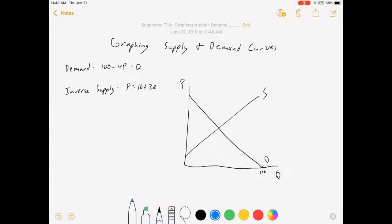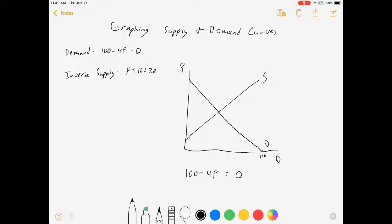So, let's solve for that next. I want to get 100 minus 4P equals zero, I'm sorry, equals Q, and I'm going to set Q equal to zero. So, 100 minus 4P equals zero.